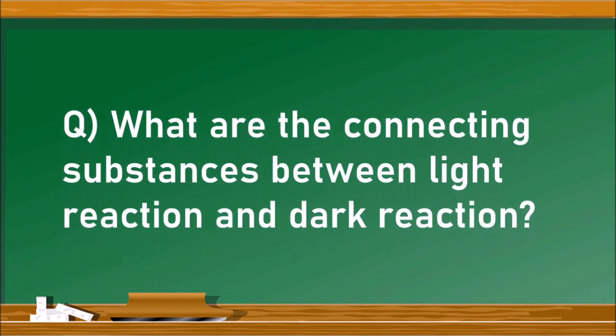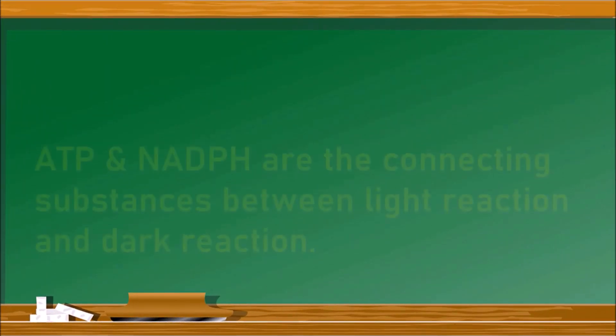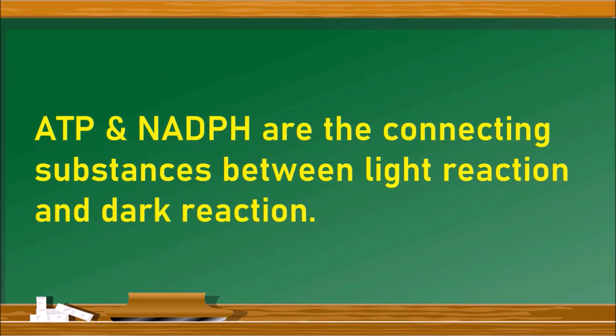The next question is: what are the connecting substances between the light reaction and dark reaction — that is, the substances formed in the light reaction and utilized in the dark reaction? They are ATP and NADP. Hence ATP and NADP are the connecting substances between the light reaction and dark reaction.